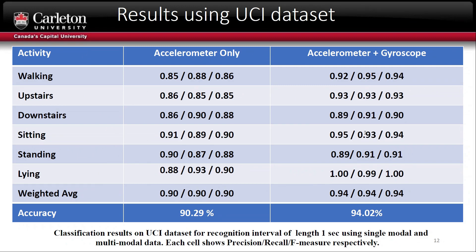The second experiment doubled the number of features by adding gyroscope data to the training set. The results show that the system can still select significant features and perform better feature selection and weighting. The overall accuracy increased from 90% to 94%.